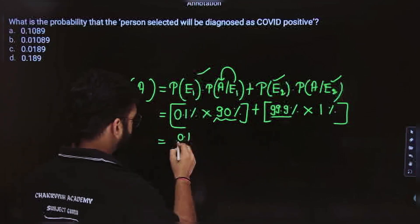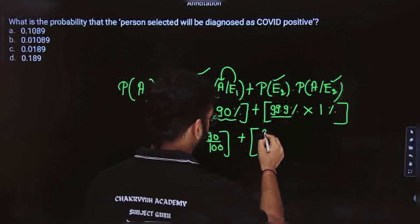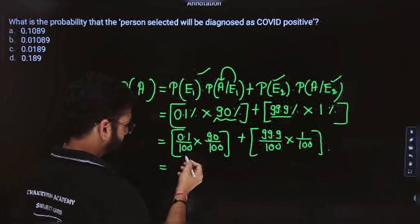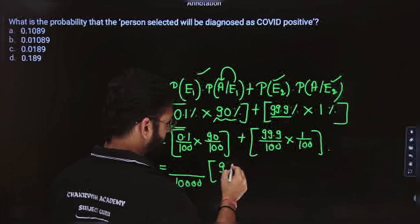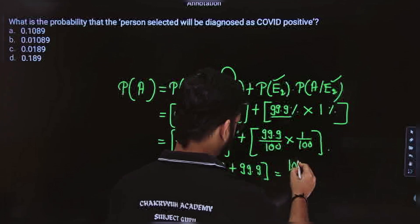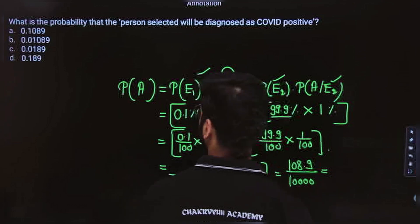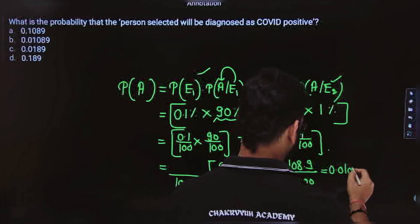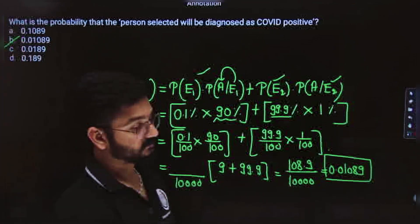Let's solve it. We get 0.1 by 100 into 90 by 100, plus 99.9 by 100 into 1 by 100. Taking common, with 4 zeros in the denominator: 0.1 into 90 gives 9, plus 99.9 gives 108.9, divided by 10000. The answer is 0.01089, which is option B.